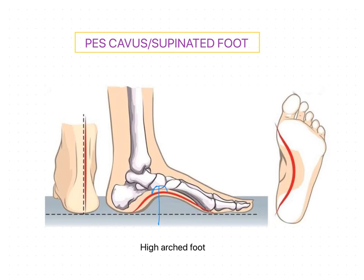Normally in Pes Cavus, the high medial longitudinal arch is associated with noticeable calcaneal inversion. This inverted calcaneus allows the medial heel pad to be observed when the patient stands with the foot straight ahead, and this has been referred to as the 'peek-a-boo sign'.